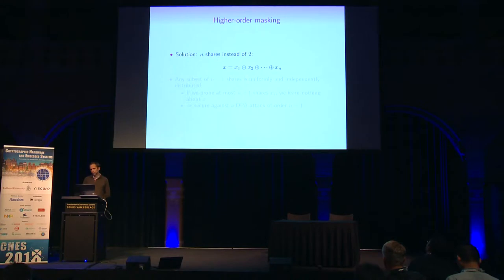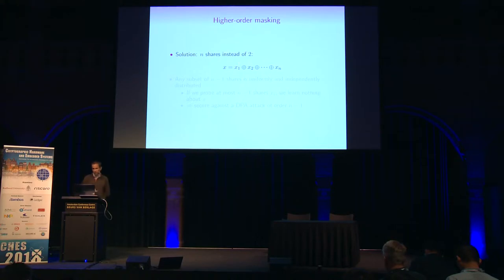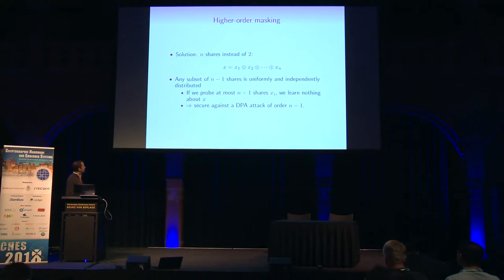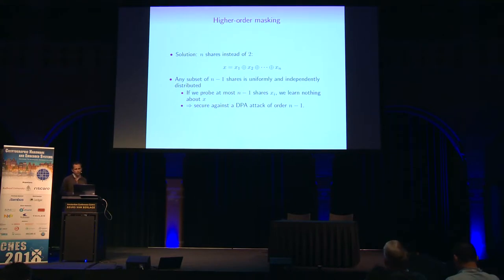A natural solution to prevent second-order attacks is to use high-order masking. Instead of having two shares, we split the original variable X into N shares — N Boolean shares X1 to XN. If any subset of N-1 shares is uniformly and independently distributed, probing at most N-1 shares reveals nothing about X. This means the countermeasure is secure against a DPA attack of order at most N-1.